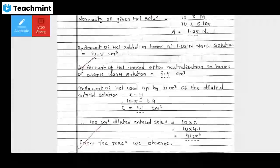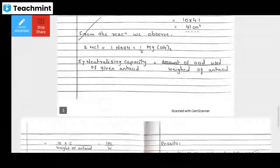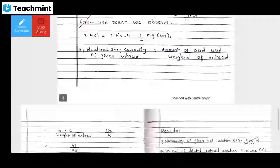The amount of HCl added in terms of 1.05 normal NaOH solution is equal to 10.5 cm³. The amount of HCl used after neutralization in terms of 0.105 normal NaOH solution is 6.4 cm³. The difference is 4.1 cm³. By using these differences we can find out the antacid solution dilution is 41 cm³.